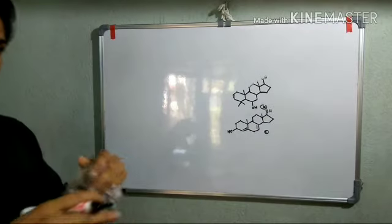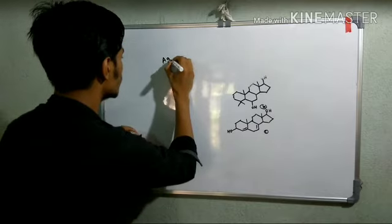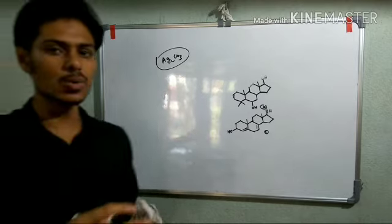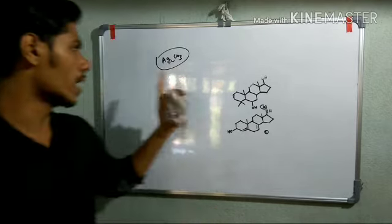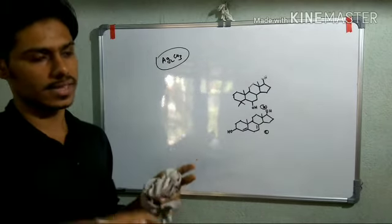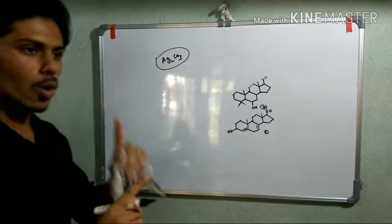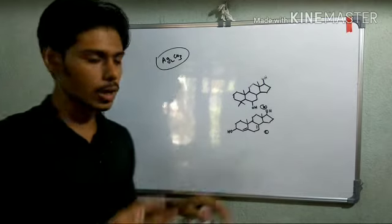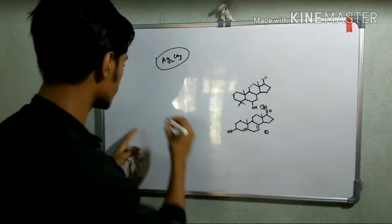Now let us talk about the silver carbonate reagent. Silver carbonate, Ag2CO3, is another very important oxidizing agent, generally used over the support of celite. It is a very mild, almost neutral oxidizing agent. It is selective for the oxidation of secondary alcohols and also allylic and benzylic alcohols.